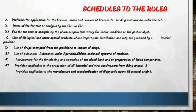Schedule D to the rules is the list of drugs exempted from provisions relating to import of drugs. The trick to remember is D means drug — so drugs exempted from import provisions.